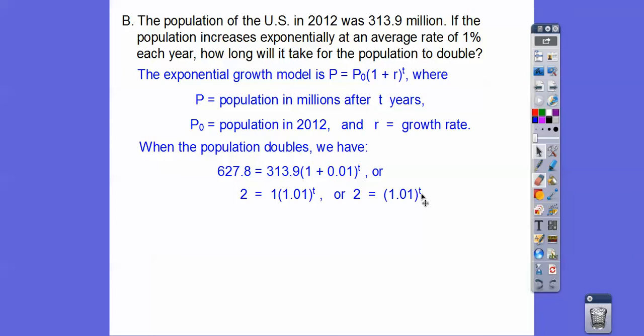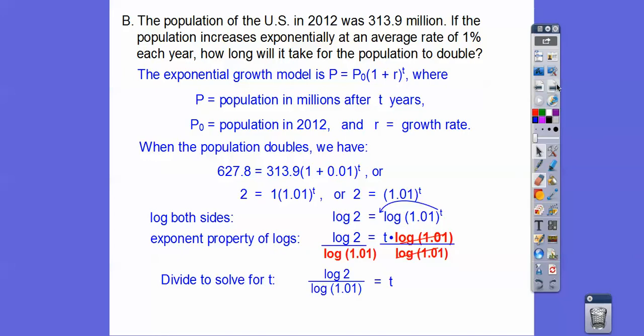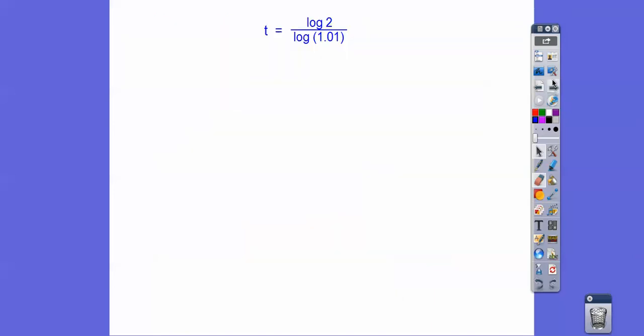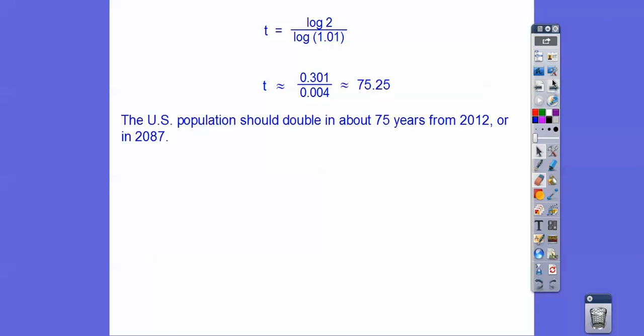Here we have an exponent with a variable. To get that exponent down, we log both sides. I'm going to log base 10 of both sides because that's what our calculators let us handle. The log of 2 equals the log of this. When you have a log with an exponent, this exponent will go right down in front. Now we can divide both sides by that log of 1.01, so the time is going to be the log of 2 divided by the log of 1.01. When you punch that in your calculator, it's about 75 years.